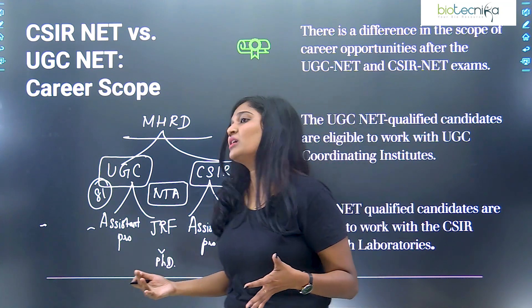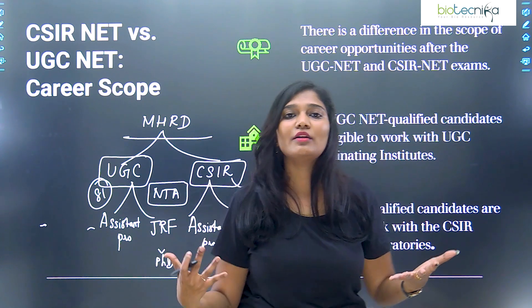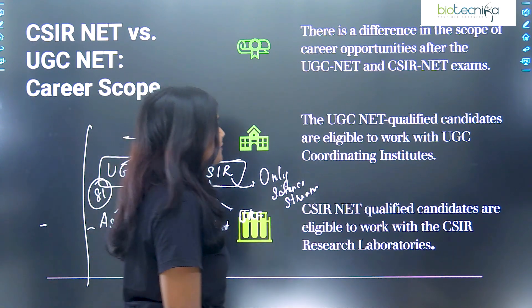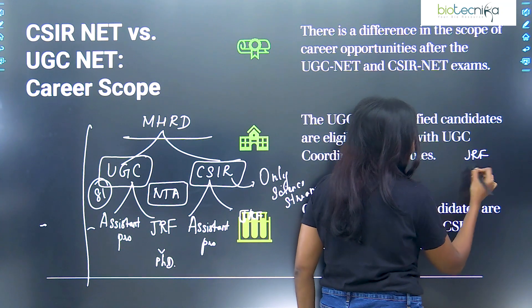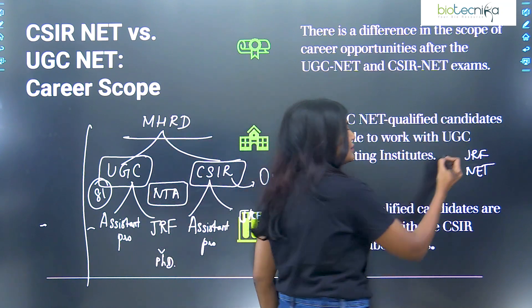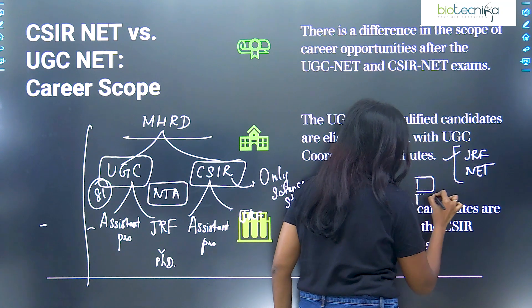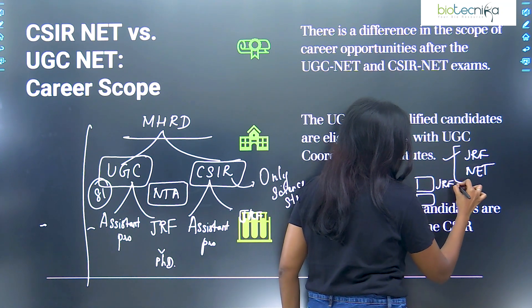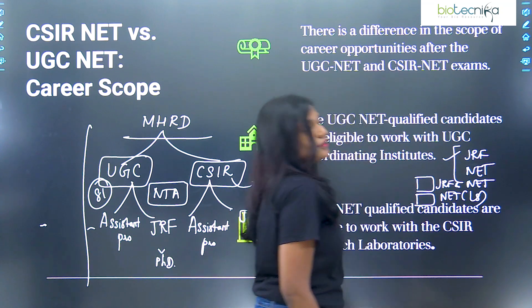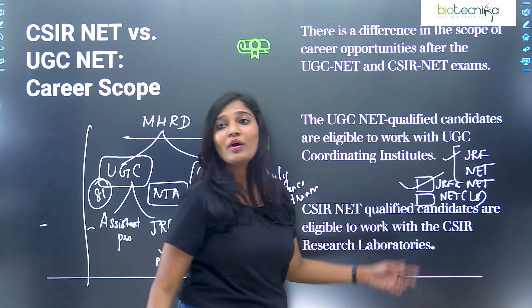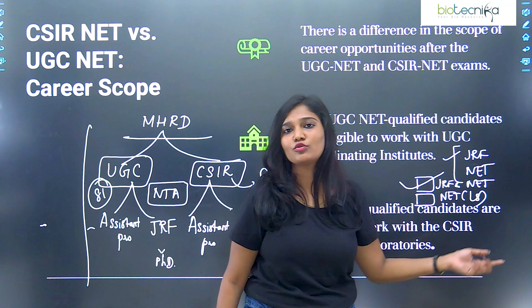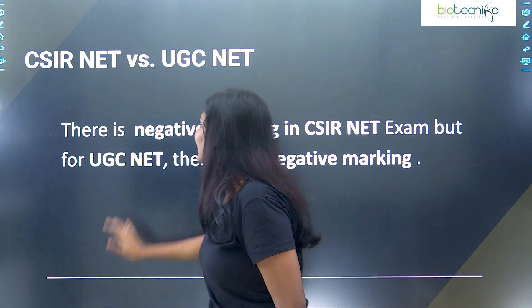Another common doubt: if I'm applying for JRF or assistant professor, how do I apply? There are two ways. In the application form for both UGC NET and CSIR NET, there is a checkbox where you can mark: one option is JRF and NET together, and another option is only NET, which refers to lecturership. If you apply for JRF and NET and have the cutoff for both, you can choose either JRF or NET. Choose wisely and plan accordingly.